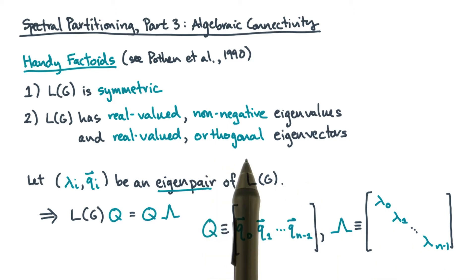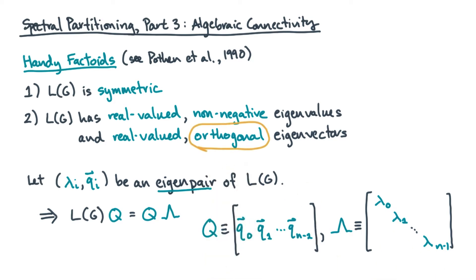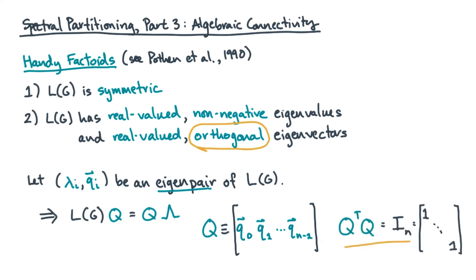Now what about the orthogonal part? Orthogonality tells us that the dot product between any pair of eigenvectors will be 0 if they are different, or 1 if they are the same. In more compact matrix notation, q transpose times q is the identity matrix.